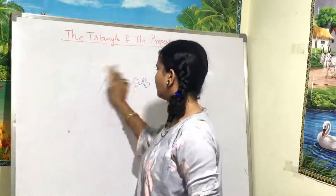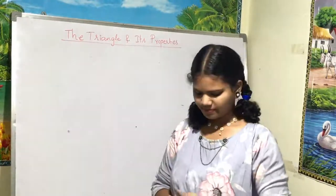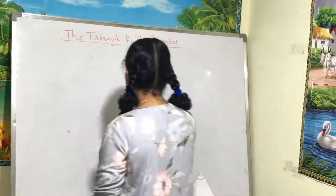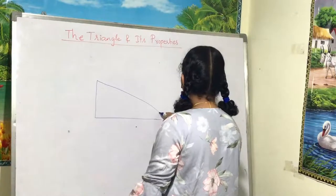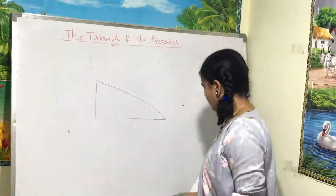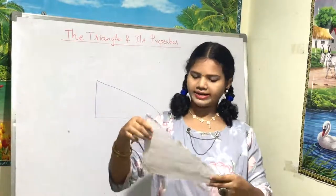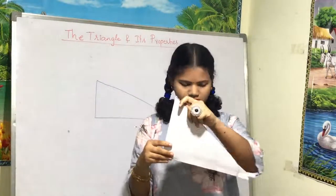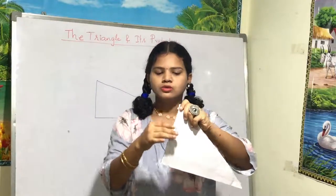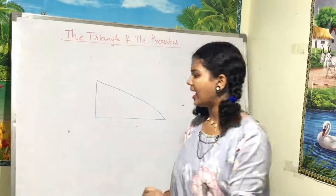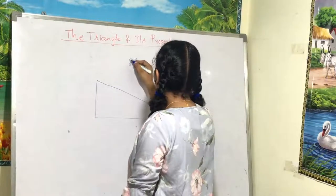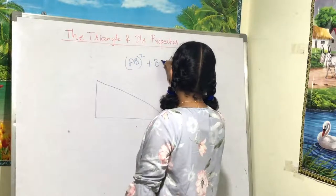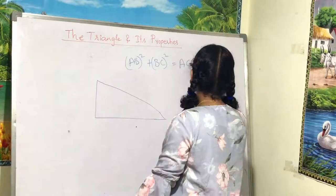The next topic is the Pythagorean Theorem. The Pythagorean Theorem is only applied to right-angle triangles specifically. In a right-angle triangle, this 90-degree angle is the right angle. The Pythagorean Theorem has a special formula: AB squared plus BC squared equals AC squared.